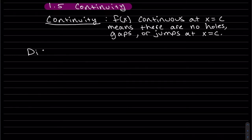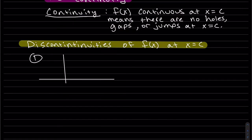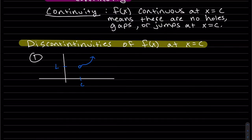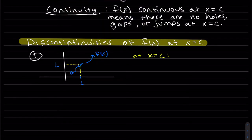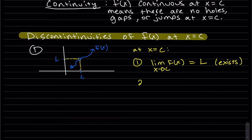So let's talk about discontinuities. At this point, you can see there's a hole. The limit does exist — the left limit does equal the right limit. But we also see that f of c, when you plug in, there's no value — it's undefined, it's not defined.